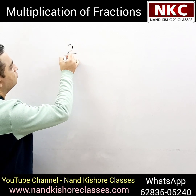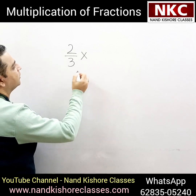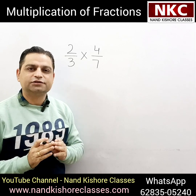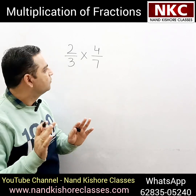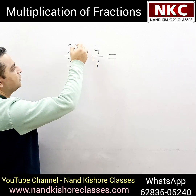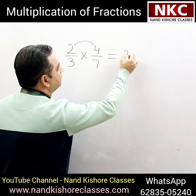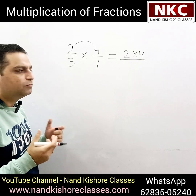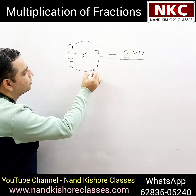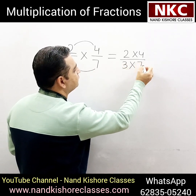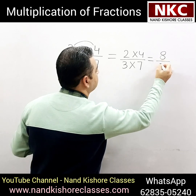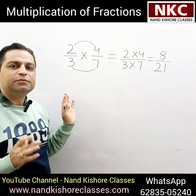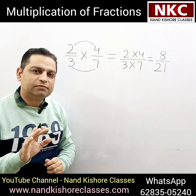Let's suppose you get a question: 2 over 3 multiply 4 over 7. If we need to multiply these two fractions, it is very easy. What we need to do is just multiply the numerators with each other — 2 and 4 will be multiplied and this will form the numerator of the final answer — and both denominators will be multiplied with each other. 3 multiply 7, and its answer will be 8 over 21. See, this is very easy, right? Numerators will be multiplied with each other and denominators will be multiplied with each other.